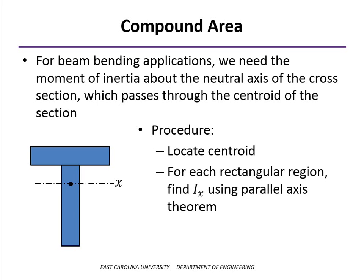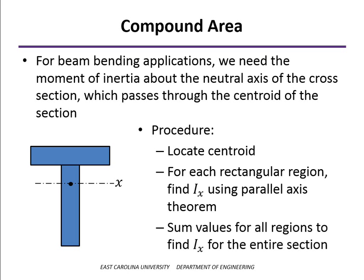Once we know that, we can look at each of our rectangular regions, and we can find the moment of inertia about that centroidal axis using the parallel axis theorem. And then we sum those values together. That will give us the moment of inertia of the entire cross-section.